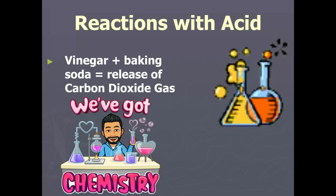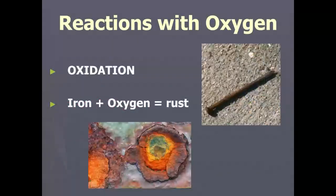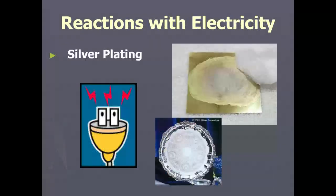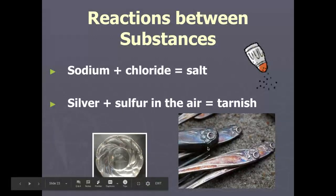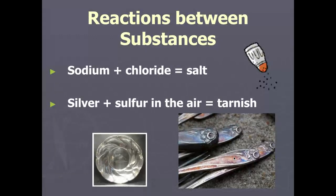Reactions with acid — for example, vinegar and baking soda will release a gas called carbon dioxide, and many more chemicals can be mixed to release a gas, get hotter, or explode. Reactions with oxygen, like oxidation — the fancy science word for rust — where oxygen and iron create rust, scientifically called iron oxide, which is not the same thing as iron. Reactions with electricity, such as silver plating. Reactions between substances — sodium and chloride mixed together make table salt; silver and sulfur in the air create tarnish, a compound that is something entirely new.